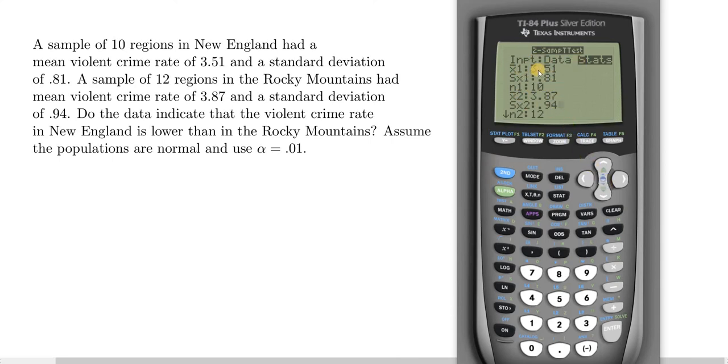Let me just double-check my work. X bar sub 1 is 3.51, that's our first mean. Our first standard deviation is 0.81. Our first sample size is 10. Then X bar sub 2 is 3.87, our other standard deviation is 0.94, and our second sample size is 12.